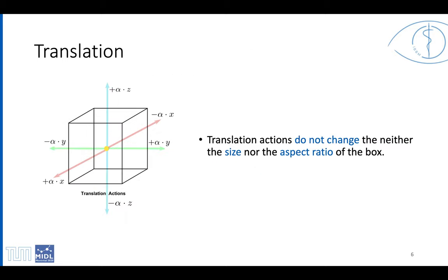The first 6 actions correspond to positive and negative translation in the X, Y, and Z directions. Translation actions do not change neither the size nor the aspect ratio of the box.